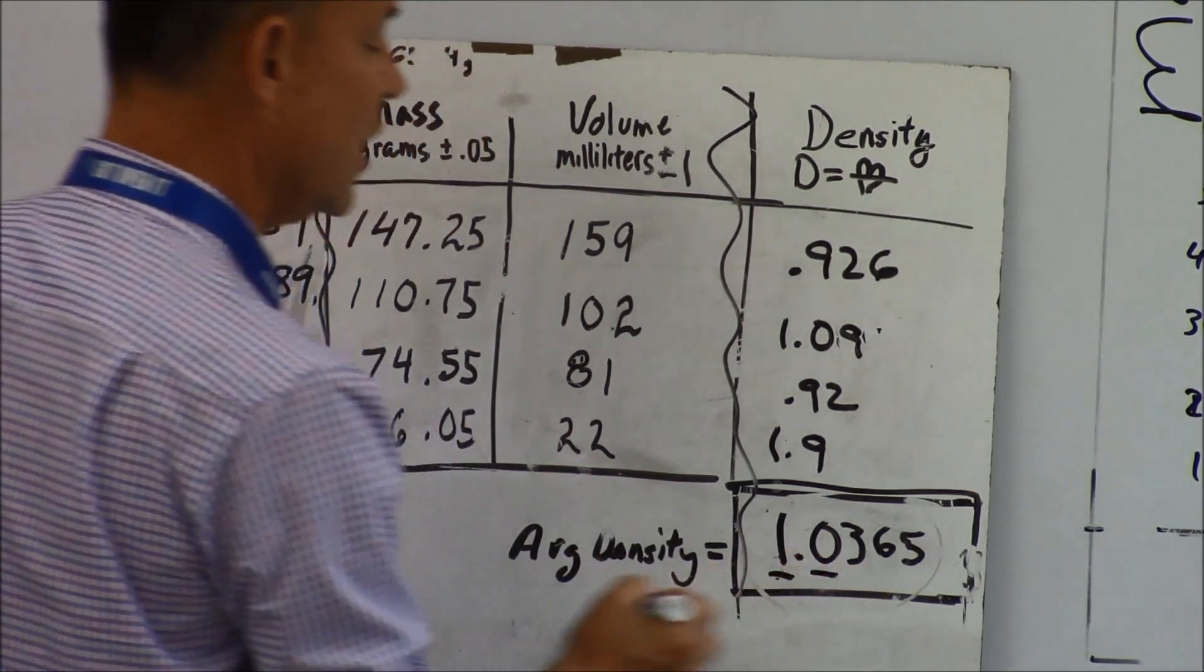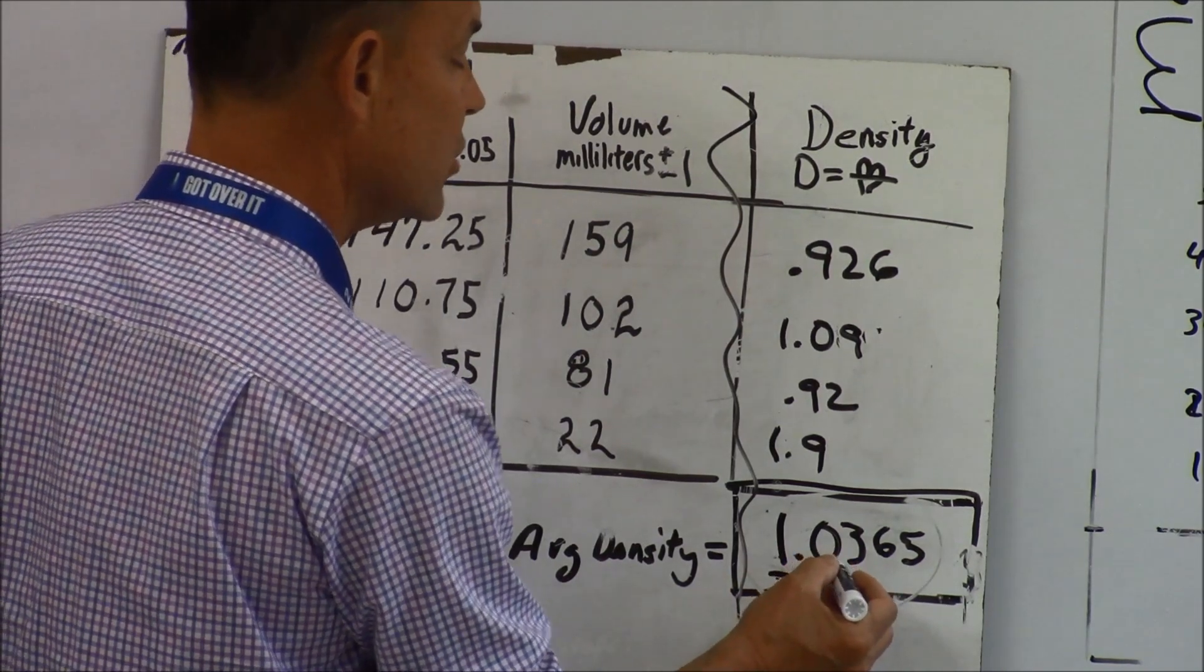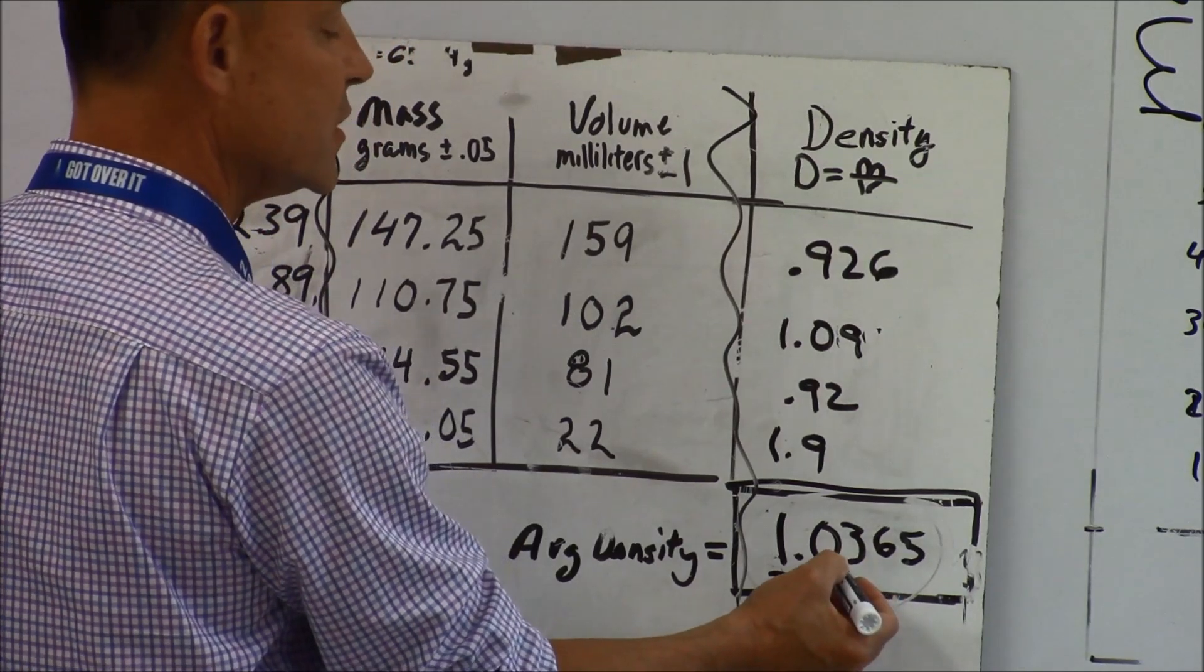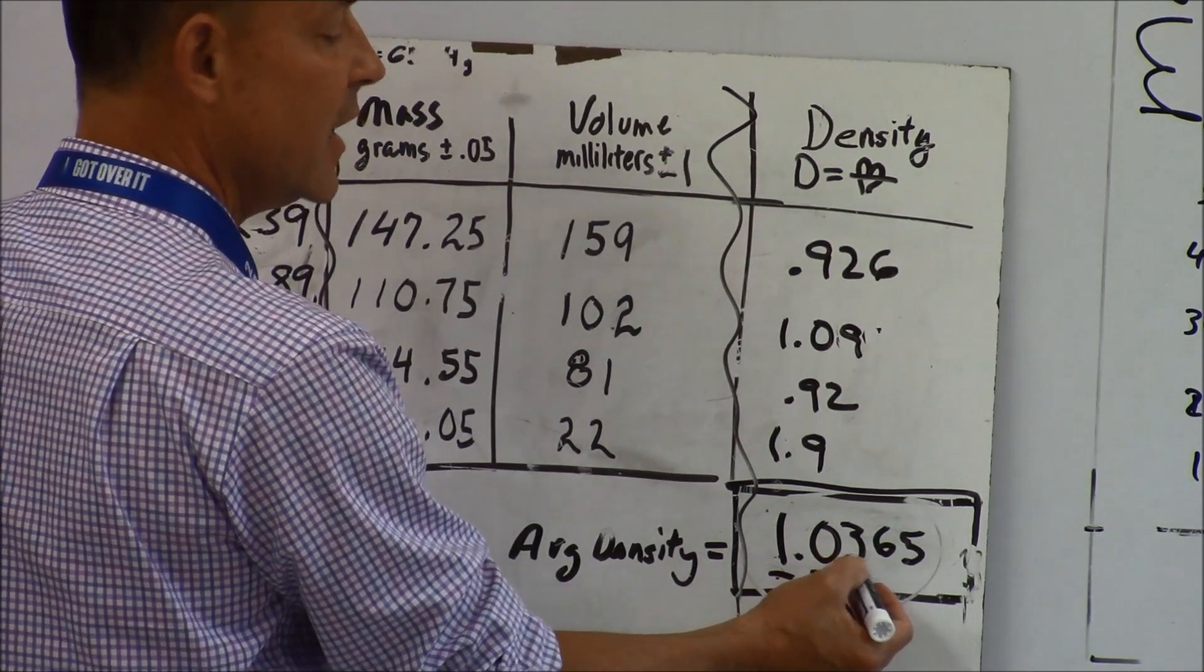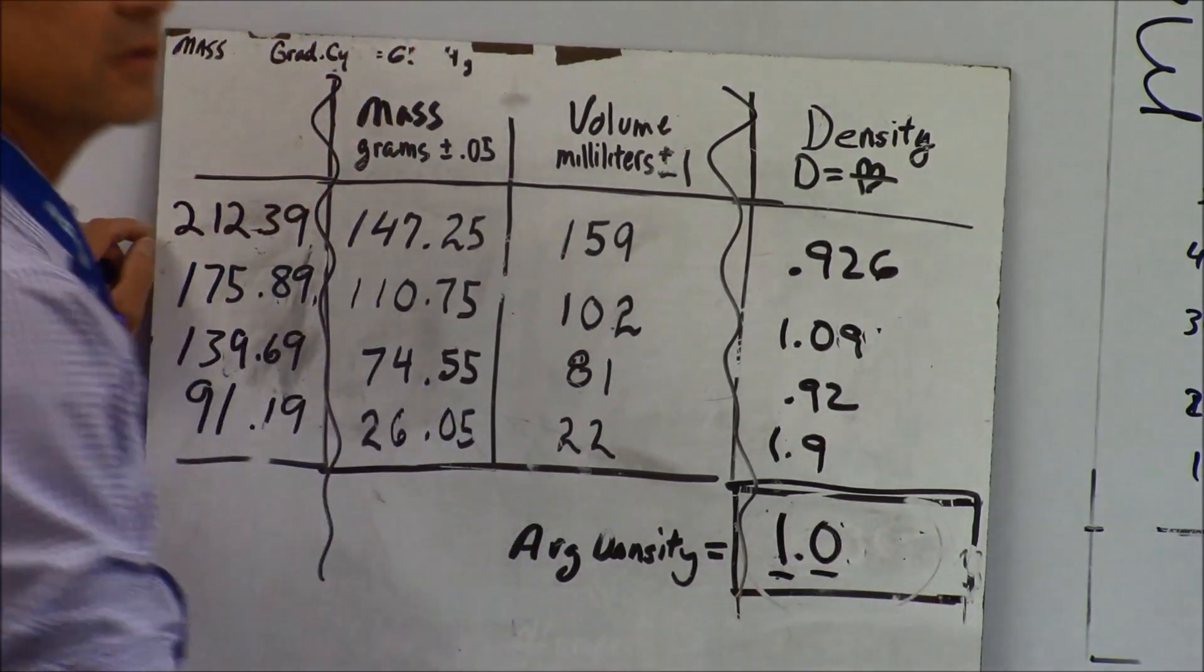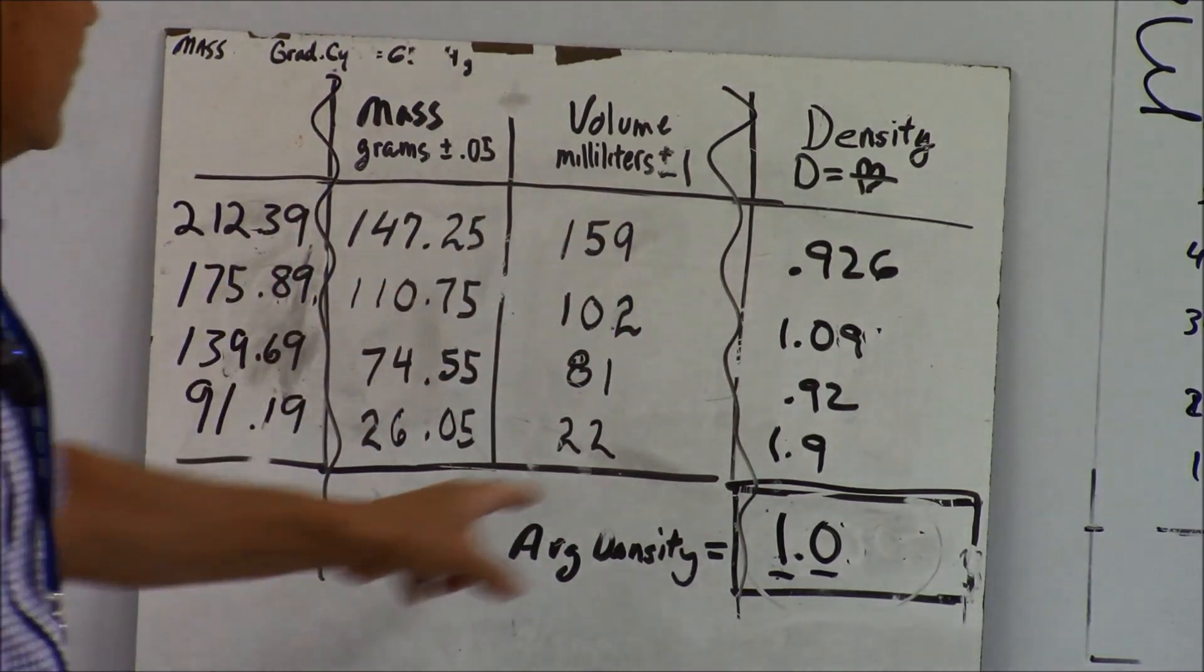And then I'm going to look to the right of the last one, and that's the three to tell me whether I am whether the zero stays the same or whether it goes up. It's a three so the zero stays the same, so I've got to erase this. So the average density for this fluid based on the four measurements, one point oh with two sig figs.